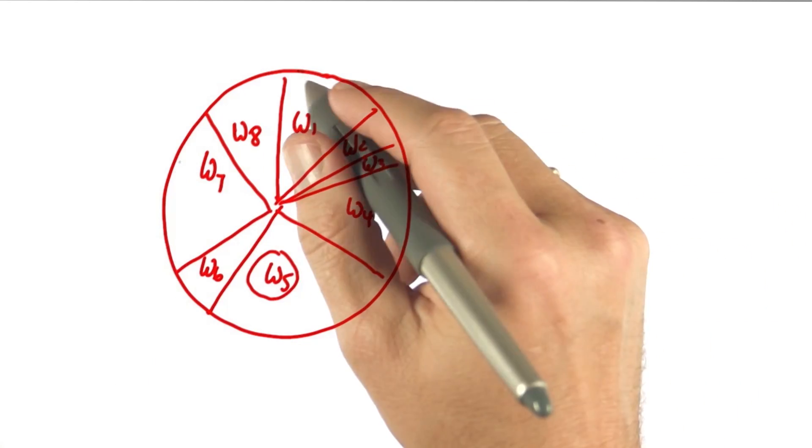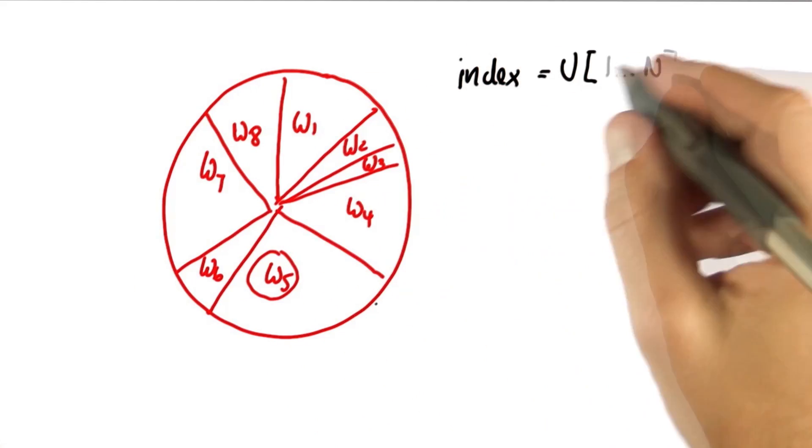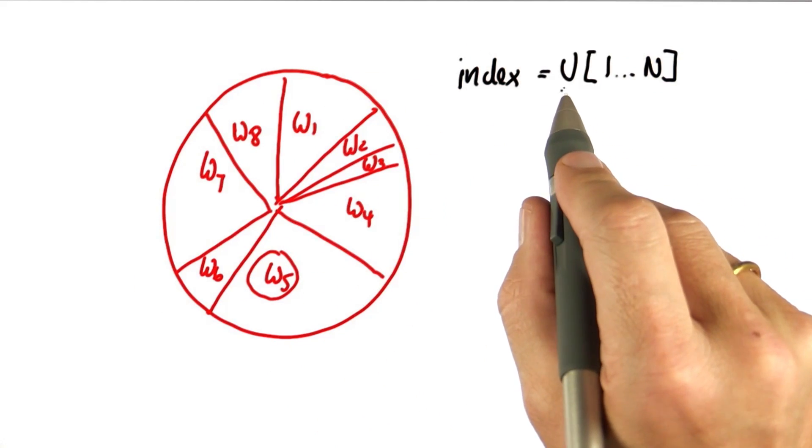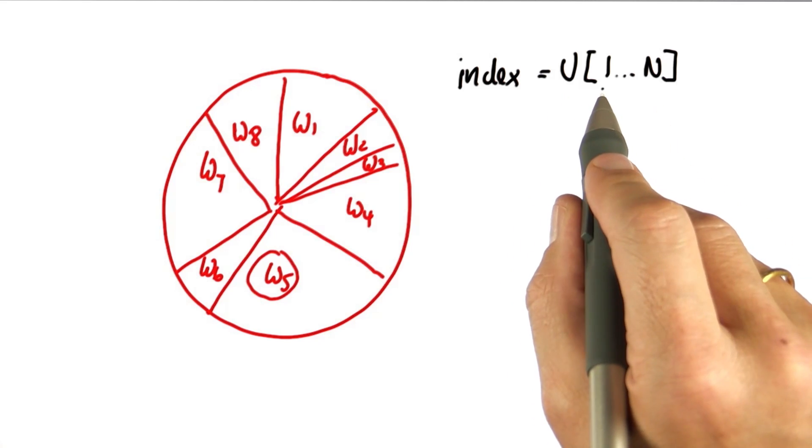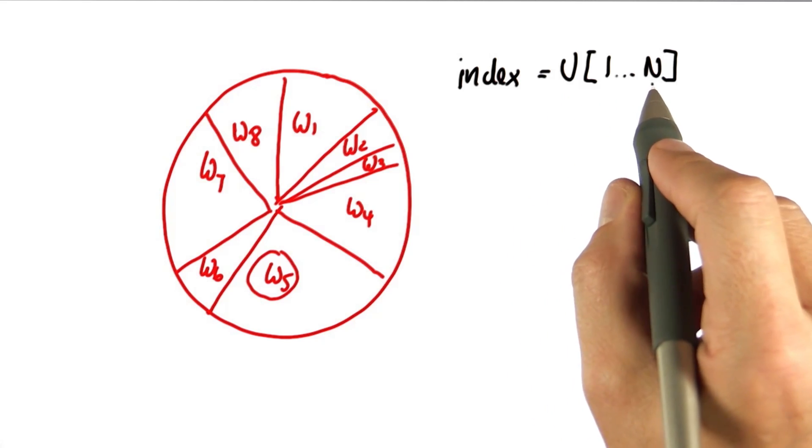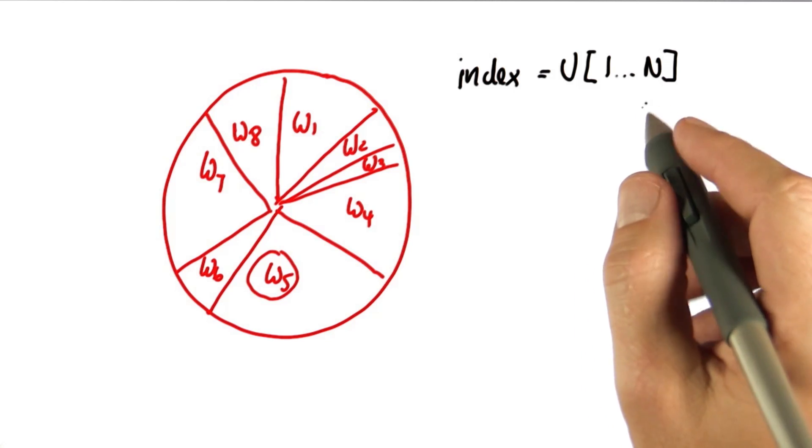Very initially, let's guess a particle index uniformly from the set of all indices. I denote this as a uniform sampler U from the discrete set of choices of index 1 all the way to N. And as a caveat in Python, of course, it goes from 0 to N minus 1.